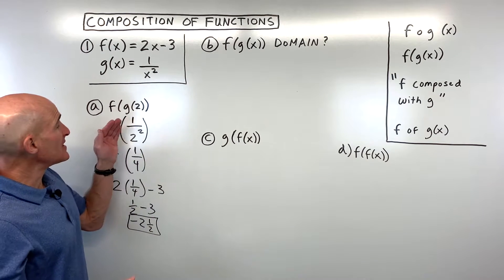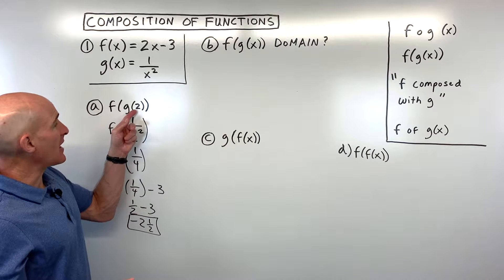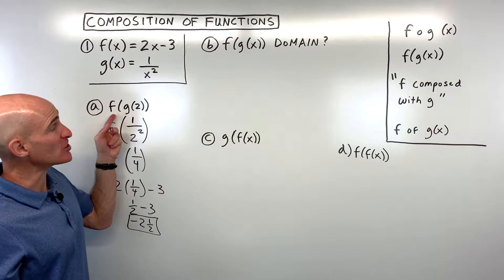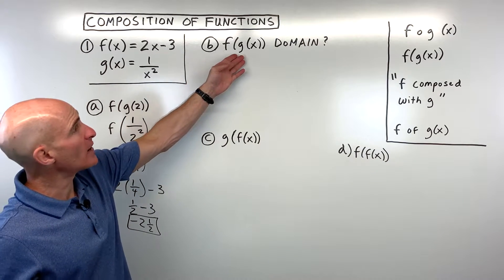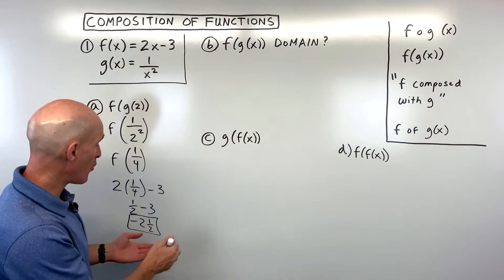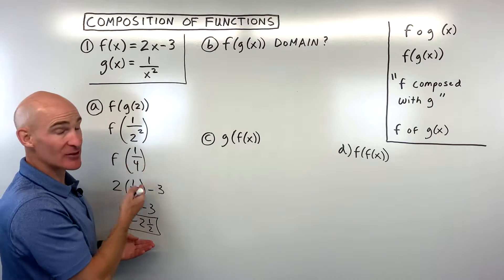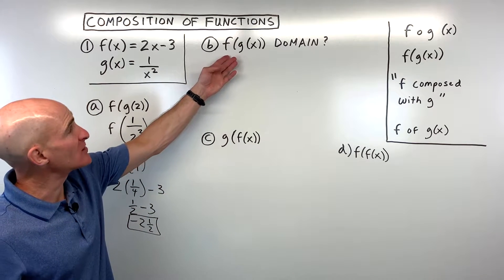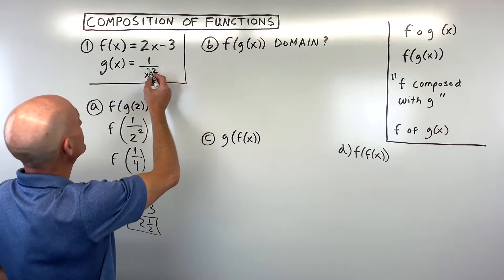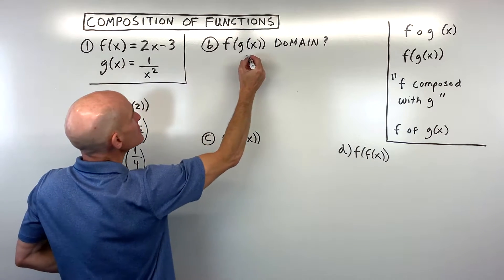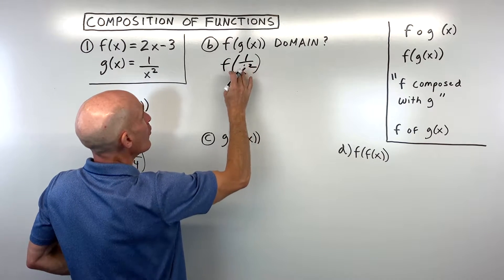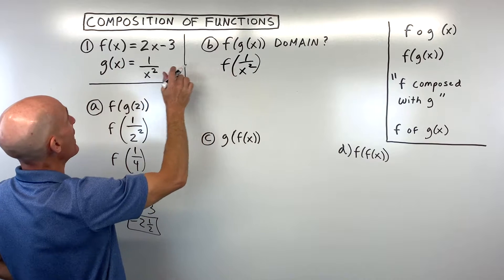We had to do this in a couple of steps — first we put 2 in for x in our g function, then that answer became our input in f. But what if we want to find a new function — the composition — that does it in one step? That's what f of g of x shows us. We take g of x, which is 1 over x squared, and now 1 over x squared is going into our f function.